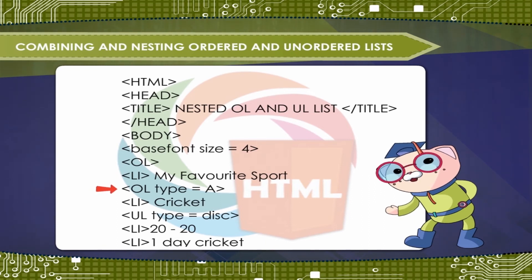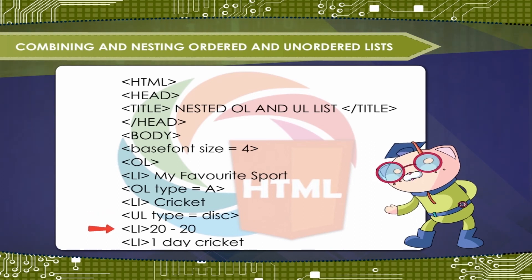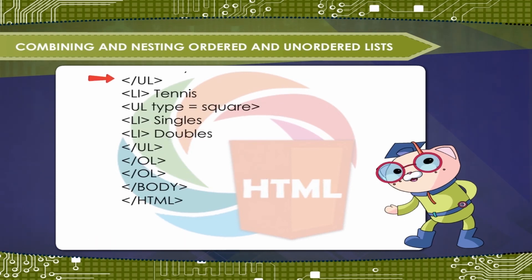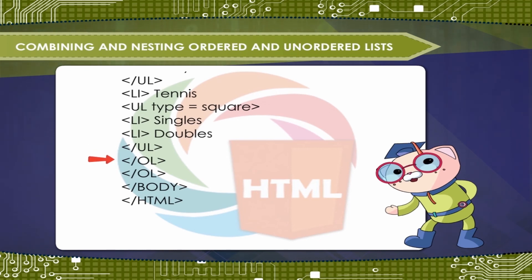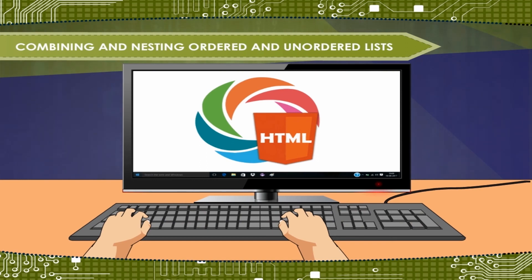Tag OL type equal to A, tag LI Cricket, tag UL type equal to disc, tag LI singles, tag LI doubles — demonstrating nested ordered and unordered lists with different type attributes such as disc and square.